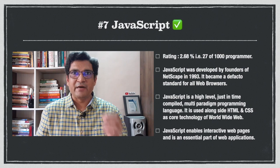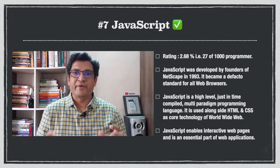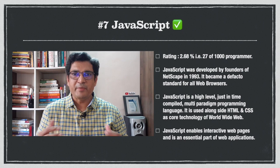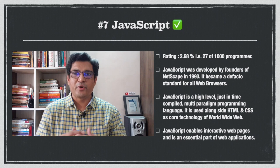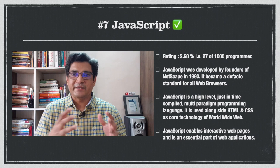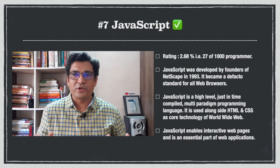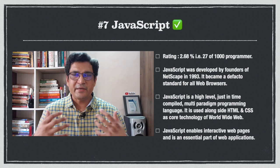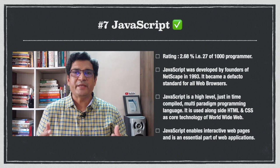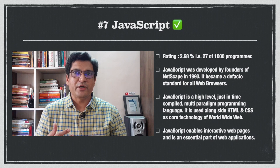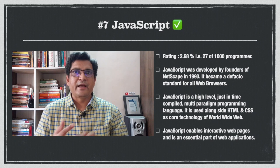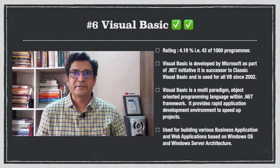At number 7 is JavaScript, developed by the founders of Netscape in 1993. It became the de facto standard for all web browsers. JavaScript is a high-level, just-in-time compiled, multi-paradigm programming language used alongside HTML and CSS as a core technology of the World Wide Web. It enables interactive web pages and is an essential part of web applications. Nowadays, JavaScript is also used on the server side using Node.js and Express.js.